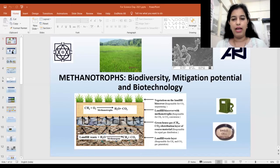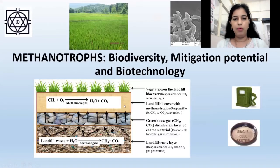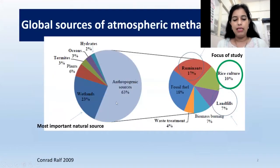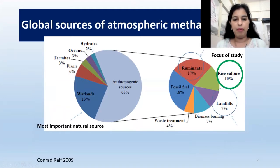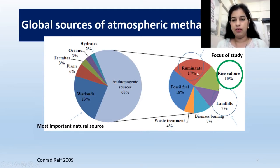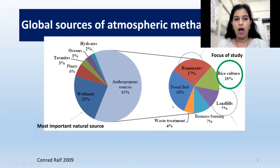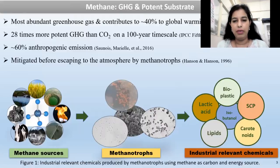Now, what are methanotrophs? For that, first we will understand what is methane. Methane is the second most important greenhouse gas and it has more global warming potential compared to carbon dioxide. As you can see from this pie chart, methane is mainly emitted by anthropogenic sources, which are exceeding the natural sources. These include ruminants, rice agriculture, landfills, and other different anthropogenic sources. So, how to combat or lessen these methane emissions in order to combat global warming is the important question.